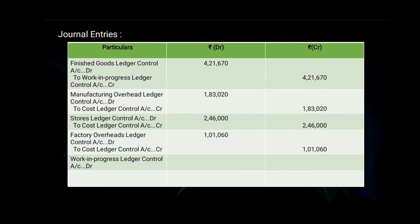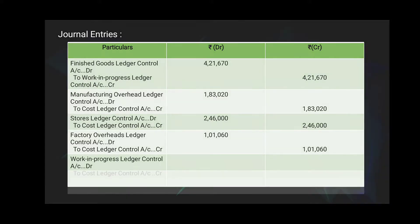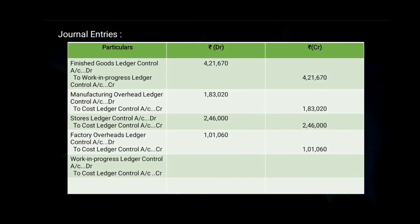For indirect labour (43,330), the journal entry will be: Work in Progress Ledger Control Account debit, to Cost Ledger Control Account — amount 43,330 on the debit and on the credit side.